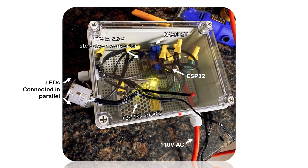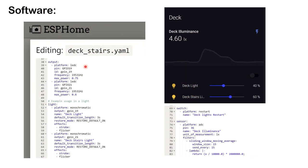There's a 12-volt to 3.3-volt step-down converter and two separate output lines. I connected just one LED to verify everything is working. I put it all in a waterproof container with a transparent top, because I also have an LDR inside that measures the amount of light around the deck, allowing me to turn the lights on and off based on ambient light intensity. For the software I chose ESPHome because it integrates with Home Assistant.